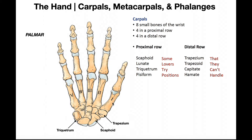It's just like in the foot where the big toe, or the hallux, was digit one. The thumb, or in this case the pollux, is what it's called — digit one. And then as you go toward the pinky, or in this case it's called digiti minimi, it's digit five. We always start toward the thumb side.